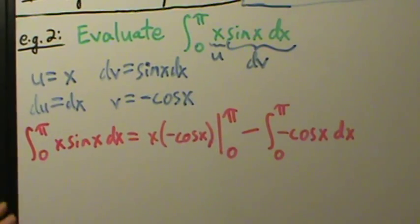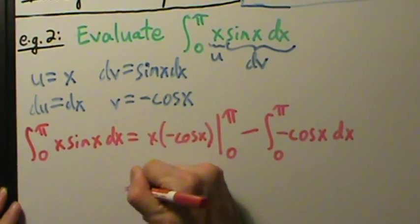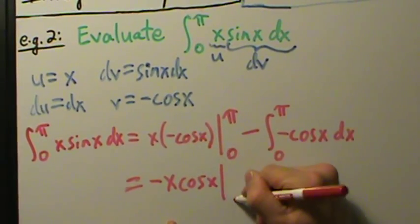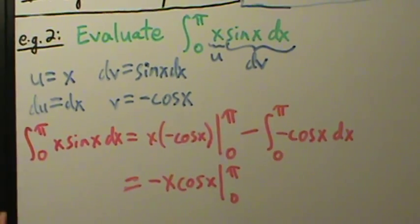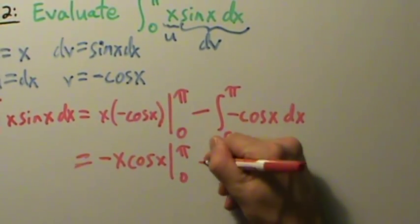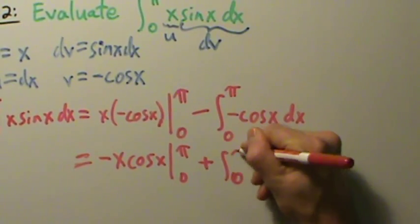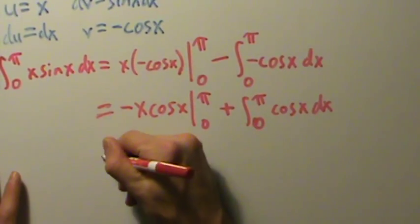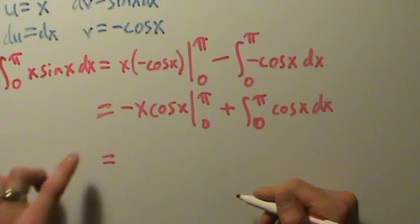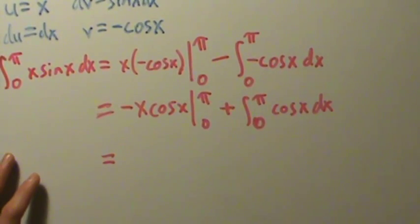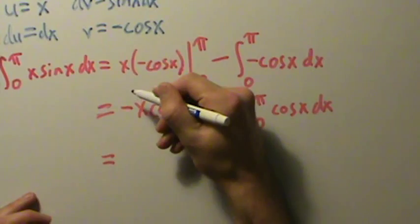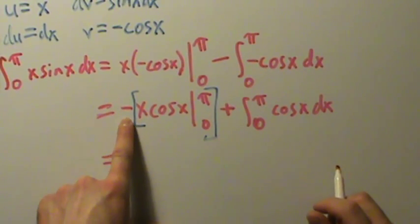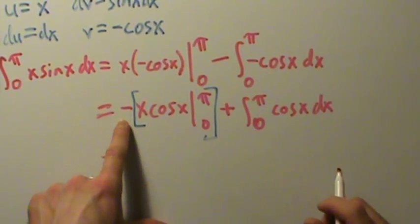Let's simplify this. This is negative x cosine of x evaluated from 0 to π. Then minus negative — so that's a plus — plus the integral from 0 to π of cosine of x dx. We can keep the minus sign factored out in brackets, since it just means multiply everything by negative one, so it's just a constant multiple we can pull out of the evaluation.